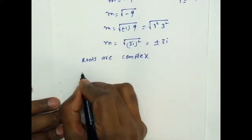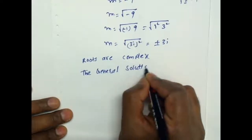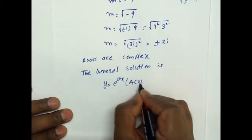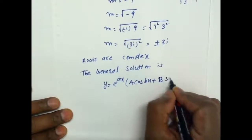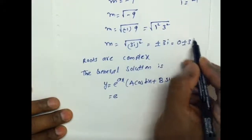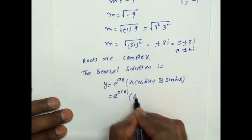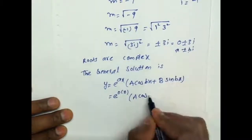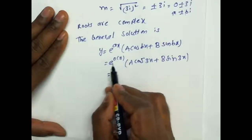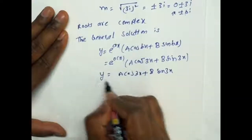Now, the general solution is y = e^(ax) · (A cos(bx) + B sin(bx)). Here a = 0, b = 3, so the solution is y = A cos(3x) + B sin(3x). This is the solution. Thank you for watching my video.